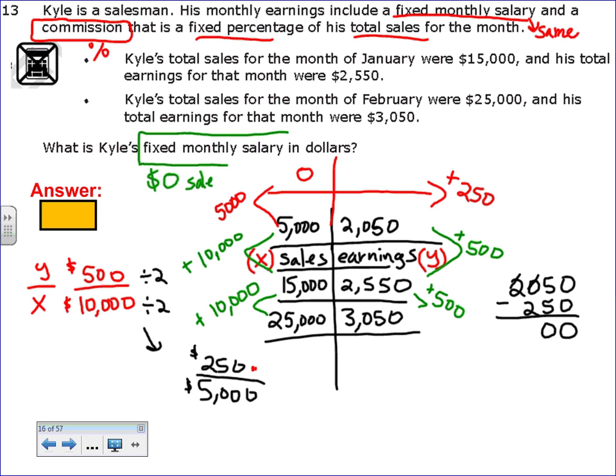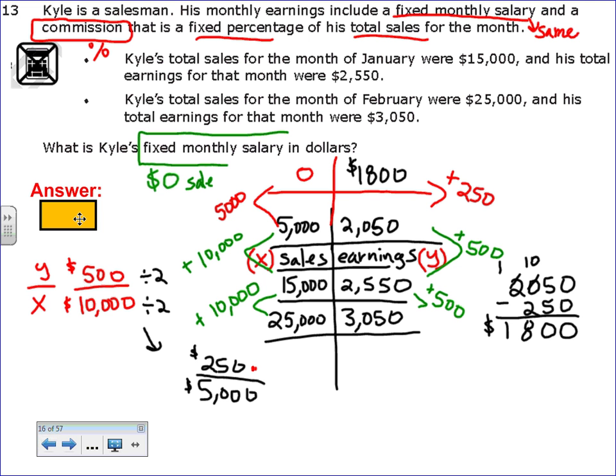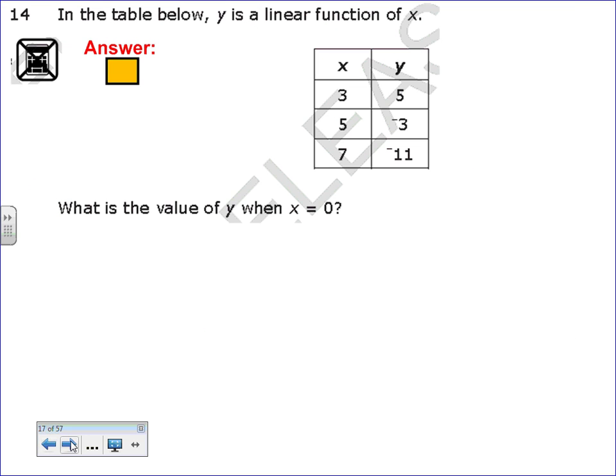So what number, when I add $250 to it, gives me $2,050? I've got to work it out. So what that means is if he doesn't have anybody come to the store and he sells $0 worth of sales, he's still going to get paid $1,800. But every $5,000 he sells, he gets $250 more. That was the answer, $1,800.